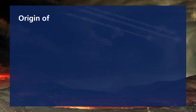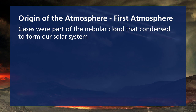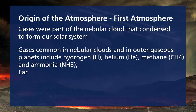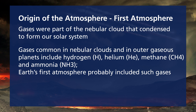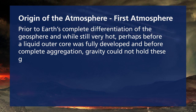The origins of the atmosphere: part of the nebular cloud which formed the geosphere also contained gases. Some of these gases we know were hydrogen, helium, methane, and ammonia. This is Earth's first atmosphere, which almost certainly included these gases directly from the nebula prior to Earth's complete differentiation into the geosphere.